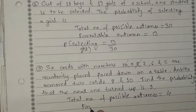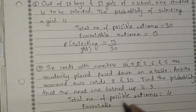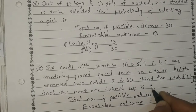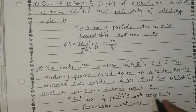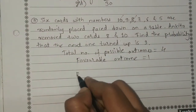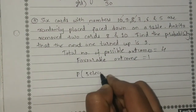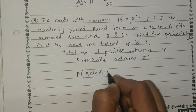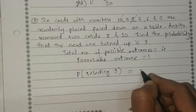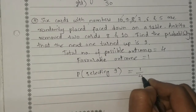The favourable outcome of getting card number 9 is 1 only. So the probability of selecting the number 9 card is 1 by 4.